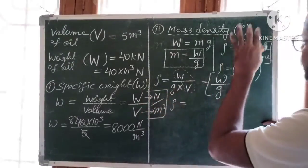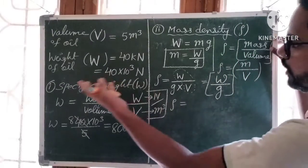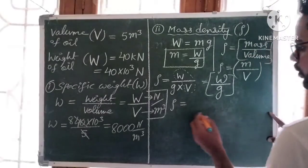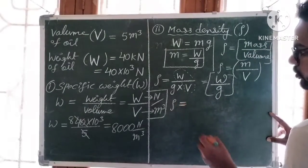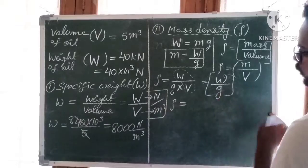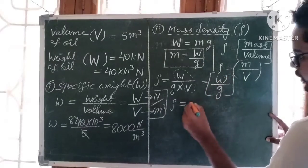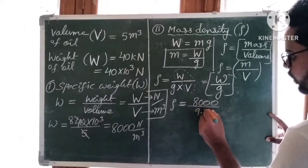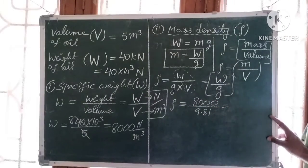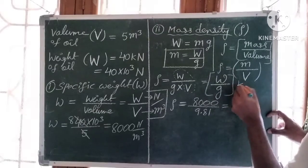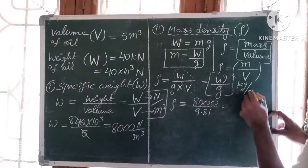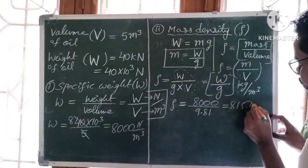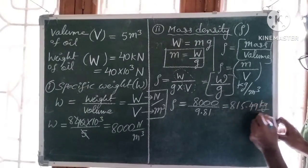We do not have mass directly, so rho equals specific weight divided by acceleration due to gravity: rho = 8000 by 9.81. The unit of density is kg per meter cube. Solving, we get 815.49 kg per meter cube.